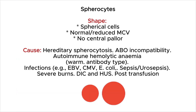Spherocytes have a spherical shape. The MCV is normal to reduced and these cells have no central pallor. This is seen in hereditary spherocytosis, ABO incompatibility, autoimmune hemolytic anemia (warm antibody type), and infections such as EBV, CMV, and E. coli.